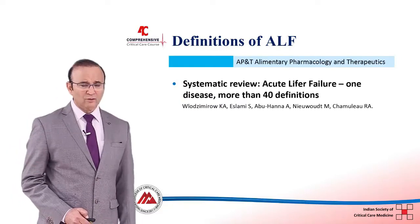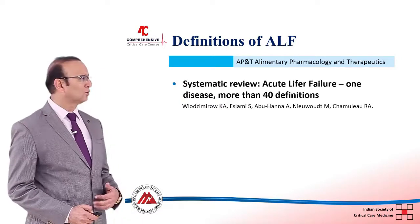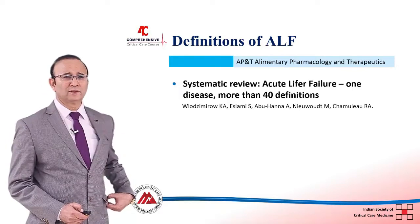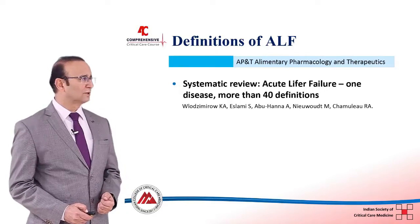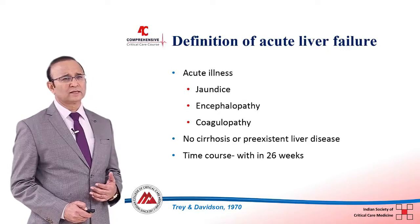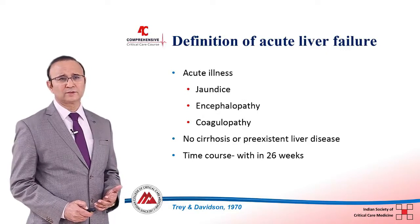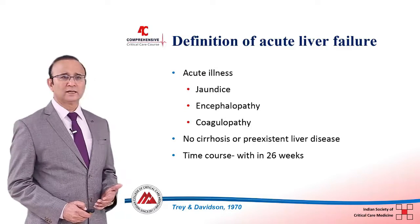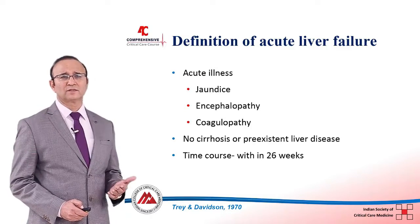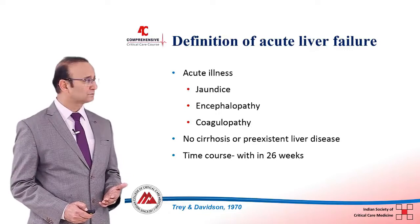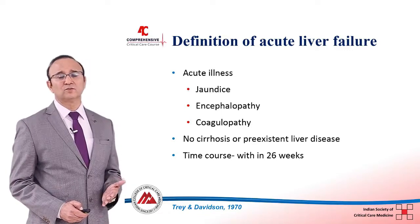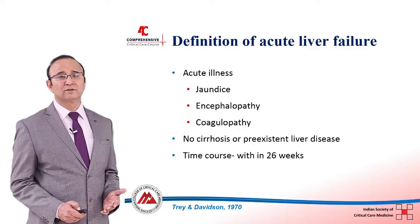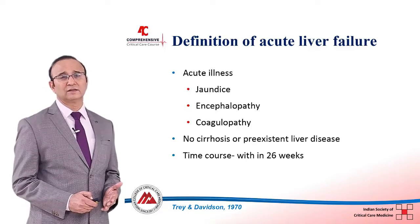First, the definition. In the literature there are almost 40 definitions and every country uses a different definition for acute liver failure. One of the most accepted definitions is given by the UK, which says that it is an acute liver injury characterized by jaundice, altered sensorium and encephalopathy, and coagulation abnormality characterized by INR more than 1.5, in a patient who has no cirrhosis or pre-existing liver disease.